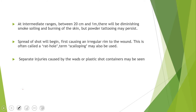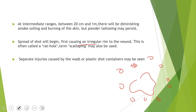The spread of shot will begin, first causing an irregular rim of the wound — called the rat hole — and there may be minute separate gunshot wounds. Separate injuries may also be caused by wads and plastic containers, which cannot follow the trajectory of the pellets and so spread out and strike the body without penetrating the tissues.